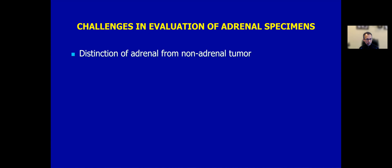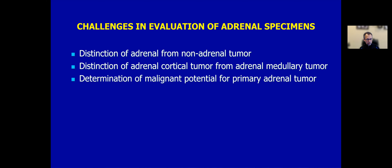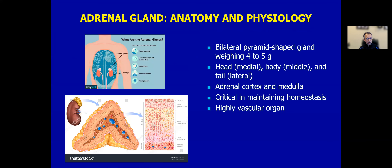The challenges in adrenal mass evaluation are threefold. Number one, you could have difficulty in distinction of adrenal from non-adrenal tumor. Within the primary adrenal tumor, distinction of adrenal cortical from adrenal medullary tumor could be challenging. The third difficulty is determination of the malignant potential of a primary adrenal tumor. Here is my simplified approach, and we will go systematically to understand the anatomy and physiology.